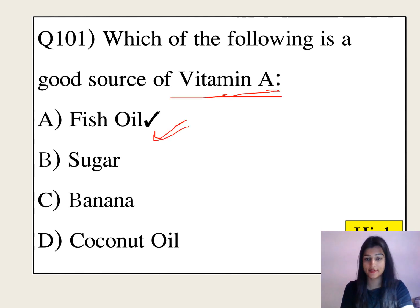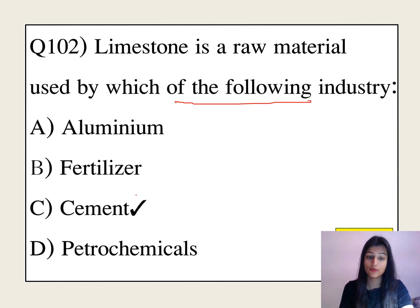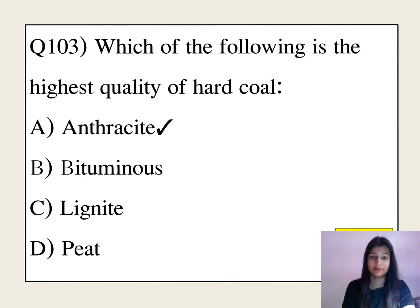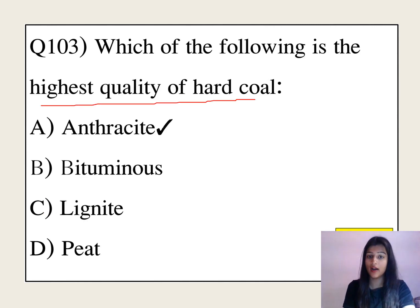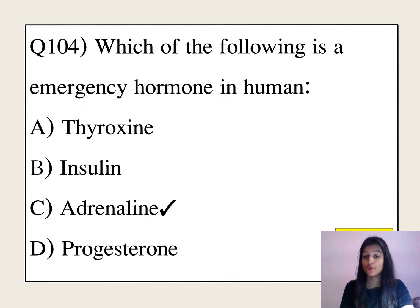Fish oil is a good source of Vitamin D. Limestone is a raw material used by the cement industry. Which is the highest quality of hard coal? An important answer: it is anthracite.